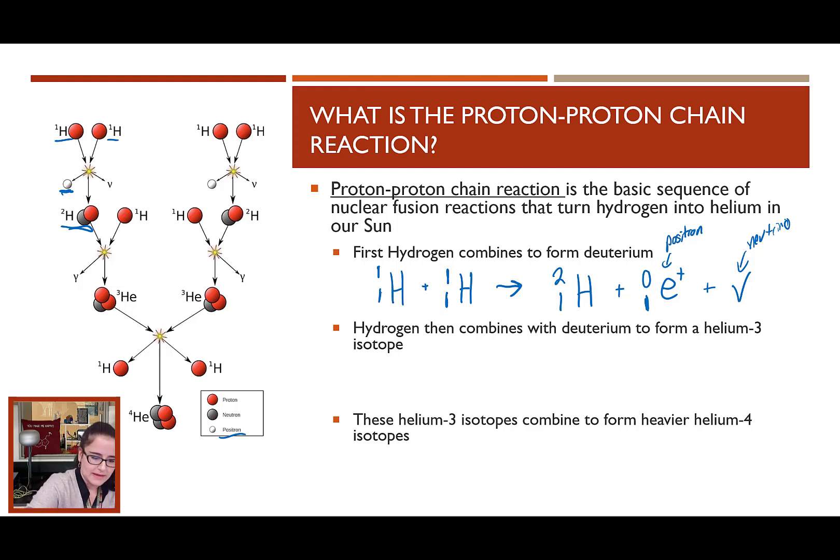The next step is the hydrogen combines with that deuterium. So, we have that hydrogen combining with the deuterium to make a helium-3 isotope. So, this one, it totally checks out. We got one plus one equals two, and one plus two equals three. So, that reaction is perfect. The other product of this is a gamma ray. And where have we seen gamma rays before? What is a gamma ray? It's light. A gamma ray is light energy.